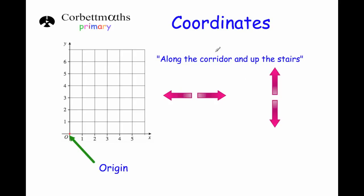Now this little saying is quite important — it's one which my students actually taught me. I didn't know this in school but they shared it with me and it's called 'along the corridor, up the stairs.' Whenever you're plotting a coordinate, you go to the origin, go along the corridor first — horizontally — and then go up the stairs — vertically. So you go left or right to begin with and then up or down. That's a useful way to remember how to plot coordinates so you don't get mixed up.